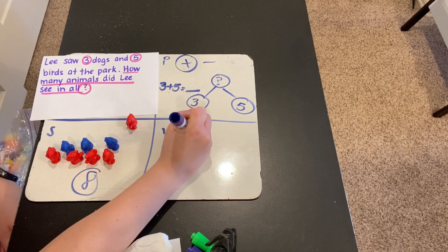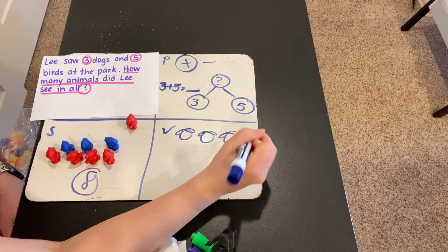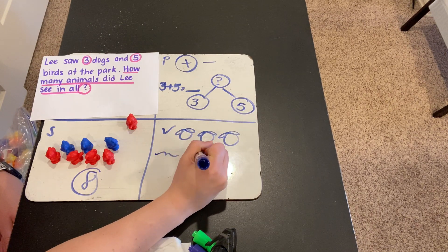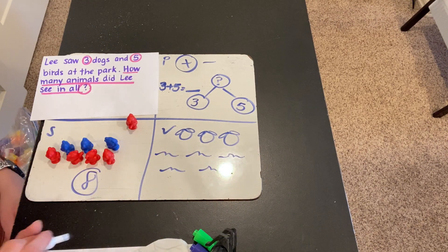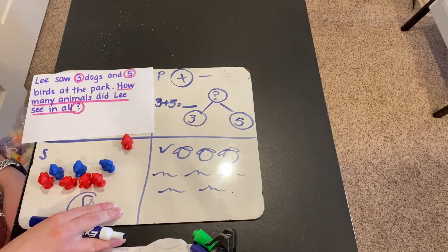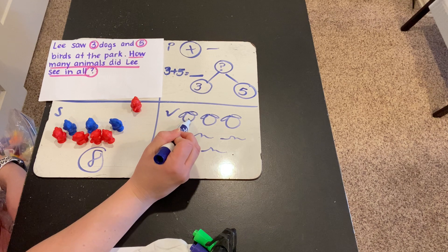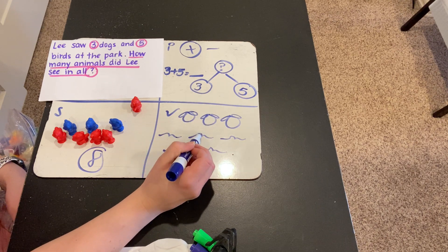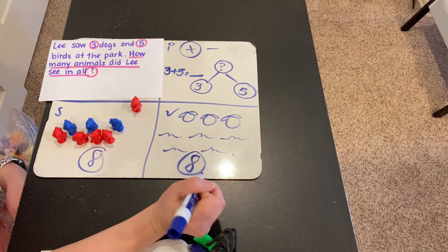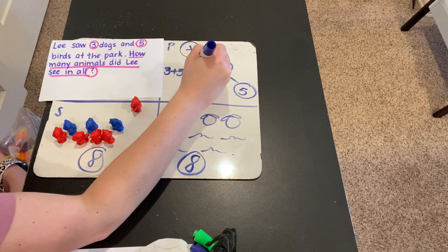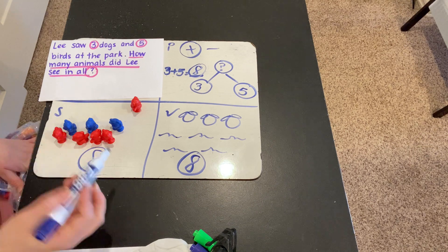Before I go with that answer, I'm going to check it a different way to make sure I still get eight. So there were three dogs — I'm going to draw a picture this time. One, two, three. And there were five birds — one, two, three, four, five. We need to count how many there are in all. One, two, three, four, five, six, seven, eight. So again, there were eight. We can answer for sure now: three plus five equals eight. How many animals did Lee see in all? Eight animals.